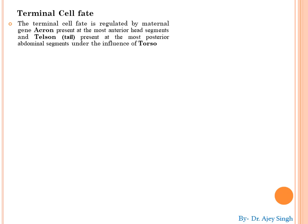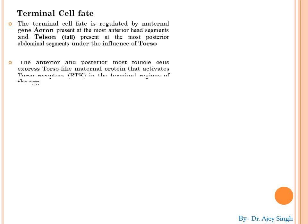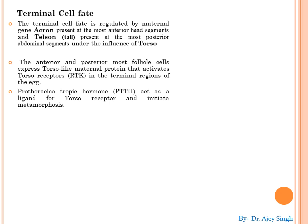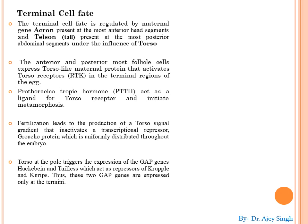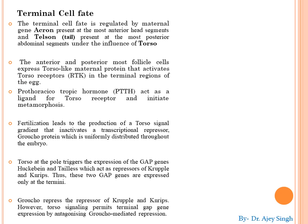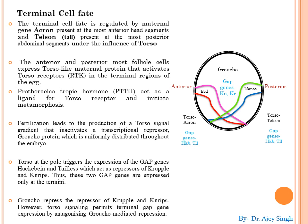Now we are going to discuss terminal cell fate. Terminal cell fate is regulated by maternal genes — acron, which is present at the most anterior region, and telson, which is present at the most posterior region — under the influence of torso protein। हम लोगों ने 10 maternal genes में से 8 का role देख लिया है। बाकी दो — acron and telson — को terminal maternal genes भी कहा जाता है, क्योंकि ये egg के terminal position पे present रहते हैं — एक anterior side पे और दूसरा posterior side पे। इन्हें establish करने के लिए torso protein की ज़रूरत होती है।